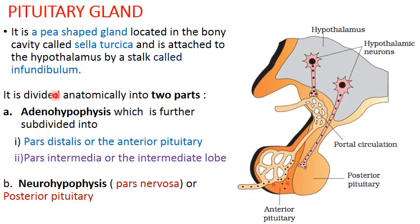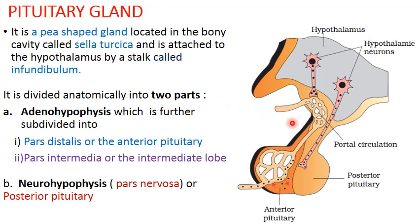Coming next to the pituitary gland. It is a P-shaped gland located at the base of the skull in a bony cavity called the sella turcica, and is attached to the hypothalamus. It is connected to the hypothalamus by a stalk called the infundibulum.